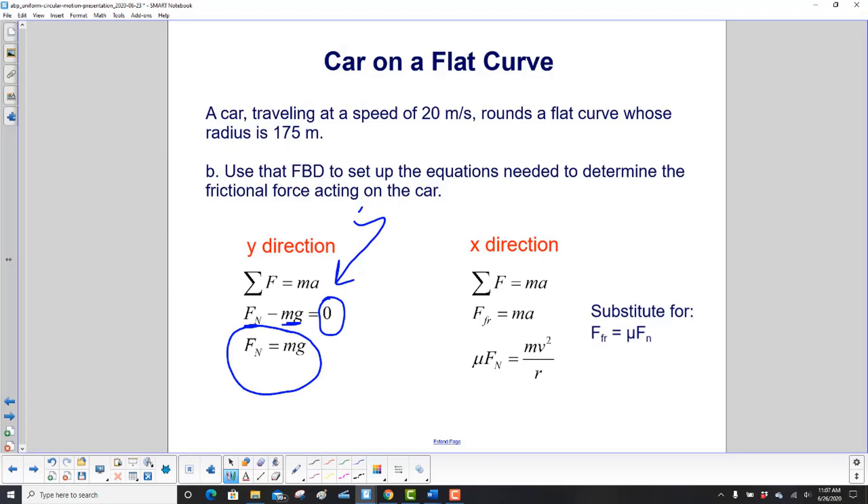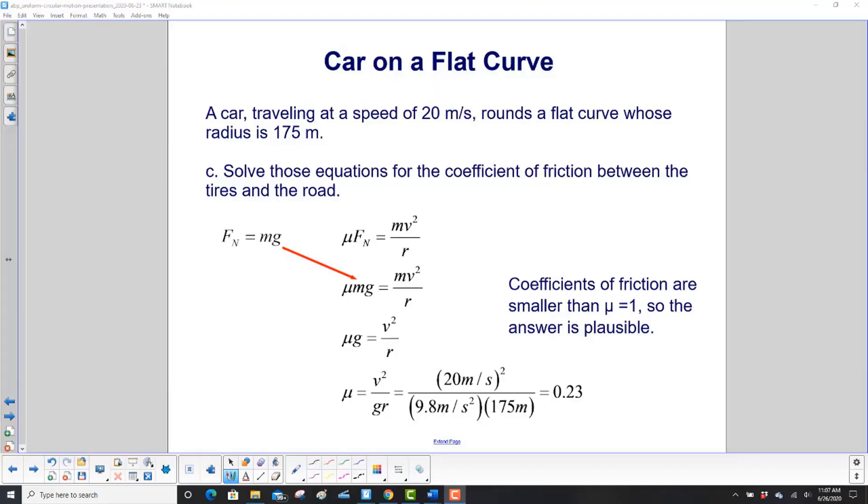Now why did we do that? Well, we're going to need the normal force for the friction force. Now let's look in our x direction. We have the sum of the forces is ma. The force we've identified as the force of friction is ma. And what is the force of friction? Well, that's μ, the coefficient of friction, times the normal force, which fortunately we found. And that equals m, and since we're going in a circle, we replace acceleration with v² over r.